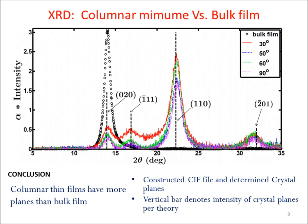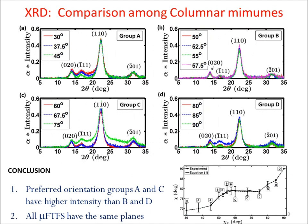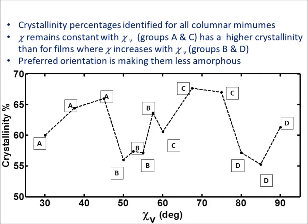The schematic for the experiment is shown here. We first constructed the crystal structure file of Parylene C polymer, then compared the XRD spectra of one columnar MIMUM from each group with the bulk film. We note two important features. First, the columnar MIMUMs have three additional crystal planes compared to the bulk film, indicating polycrystalline nature. At the crystal plane 0-0-0 present in both bulk and columnar MIMUMs, the intensities of the columnar MIMUMs are lower than that of the bulk film. Comparing all columnar MIMUMs, all share the same crystal planes. Furthermore, groups A and C, where chi remains constant with chi-v, have higher intensity than groups B and D, where chi increases with chi-v, supporting a preferred orientation in groups A and C.